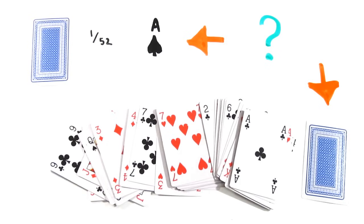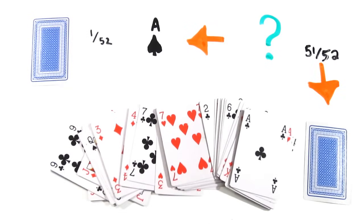It turns out, your card remains at a chance of 1 in 52, where my card now has a 51 out of 52 probability of being the Ace of Spades.